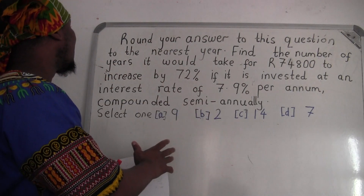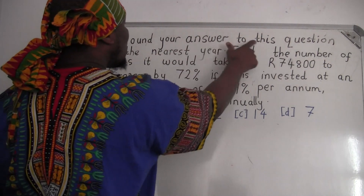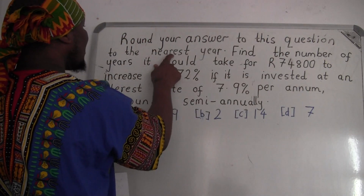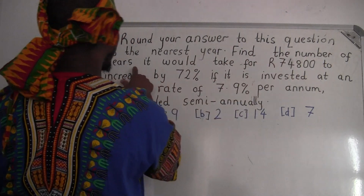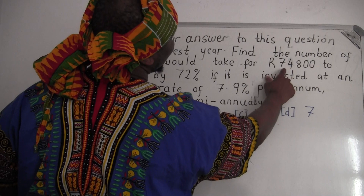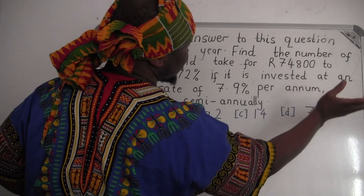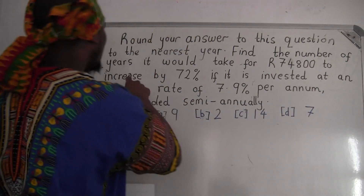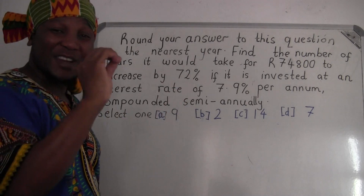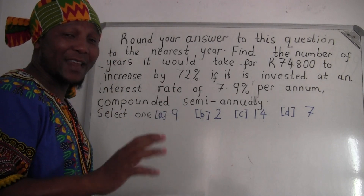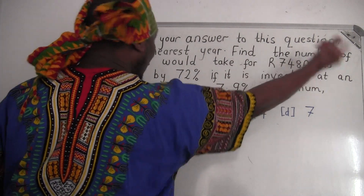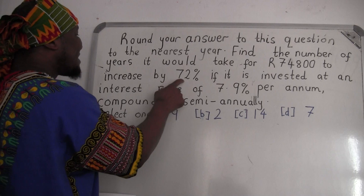Let's get into it. Round your answer to this question to the nearest year. Find the number of years it takes for 7,400,800 to increase by 72%.